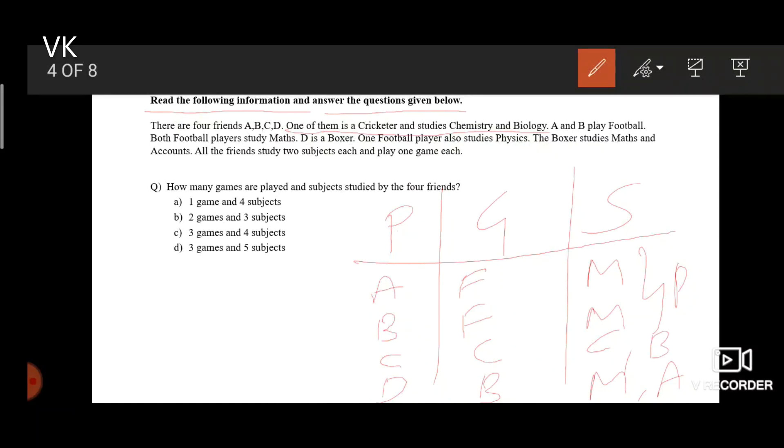Now that we have taken all the data, let's look at the question. How many games are played and subjects studied by 4 friends. So when we look at the games column, we have football, cricket and boxing. So there are 3 games. And maths, chemistry, physics, biology, accounts. So there are 5 subjects. Hence option D is the final answer.